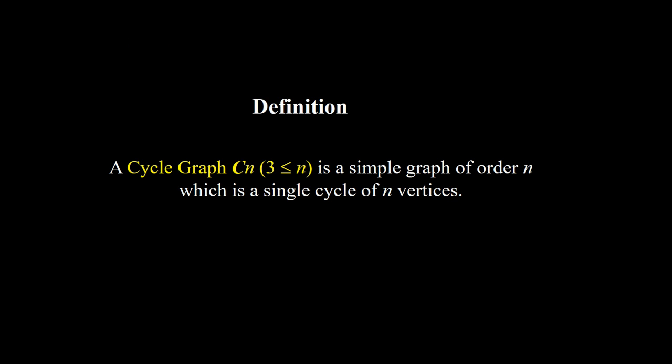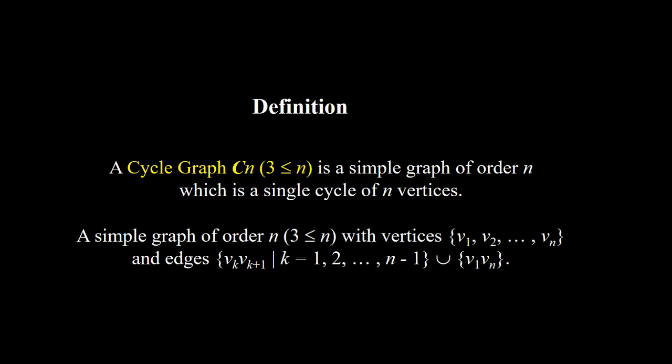A cycle graph, denoted by Cn where n starts from 3, is a simple graph of order n which is a single cycle of n vertices. In other words, Cn is a simple graph of order n with vertices v1, v2, until vn, and edges vk vk+1 where k is 1, 2, until n minus 1, and also the edge v1 vn.